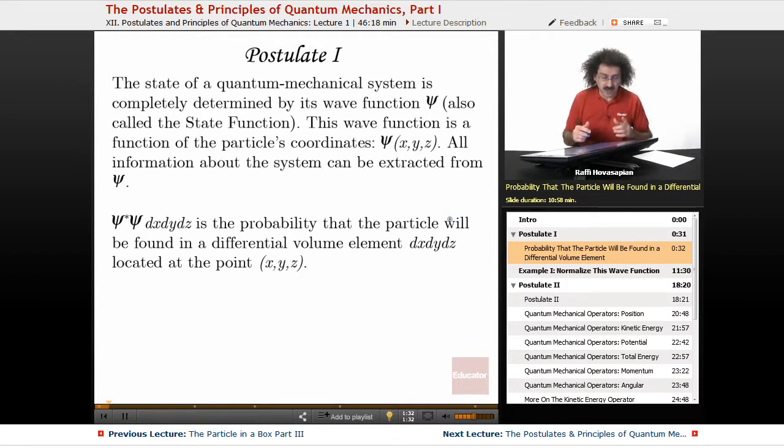Postulate number one: The state of a quantum mechanical system is completely determined by its wave function, also called the state function. Just like PV = NRT is an equation of state, Ψ is the wave function that tells us what state the quantum mechanical system is in. This wave function is a function of the particle's coordinates. For a particle in a one-dimensional box, it's a function of x. Two-dimensional box: x,y. Three-dimensional: x,y,z. All information about the system can be extracted from Ψ. This is very important.